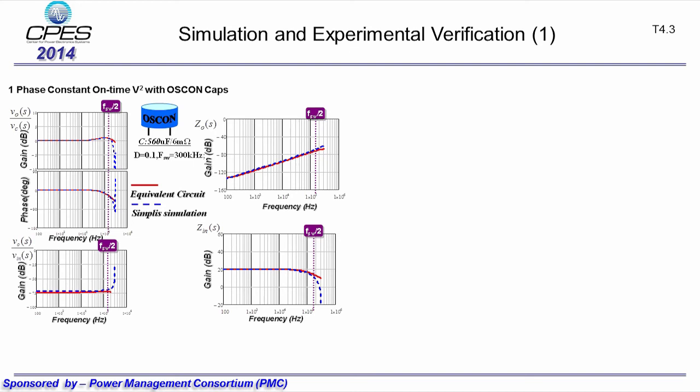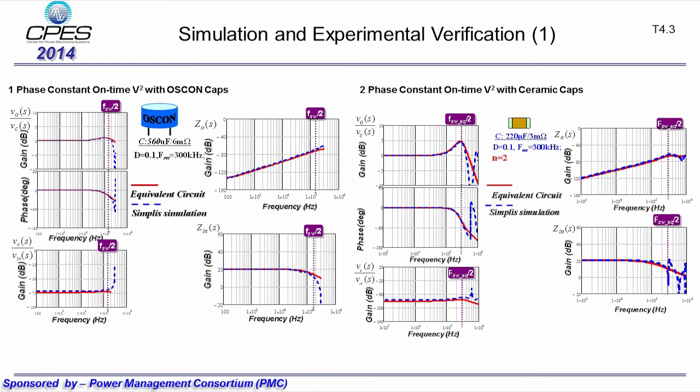This shows simulation verification for a two-phase constant on-time V² control with ceramic capacitors. Again, the proposed model can predict the double pole at half of switching frequency very accurately, and it agrees with simulation results very well for all four transfer functions.